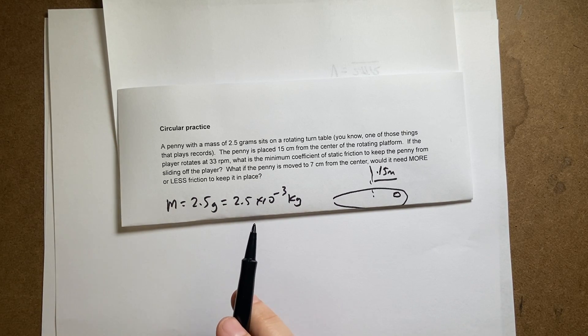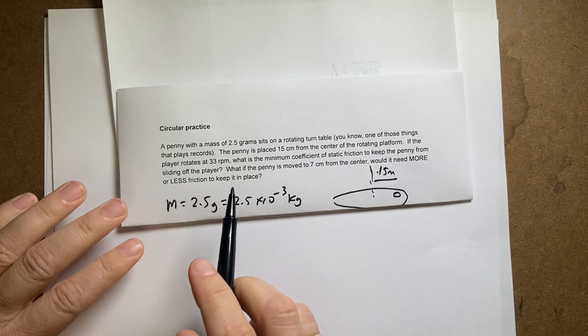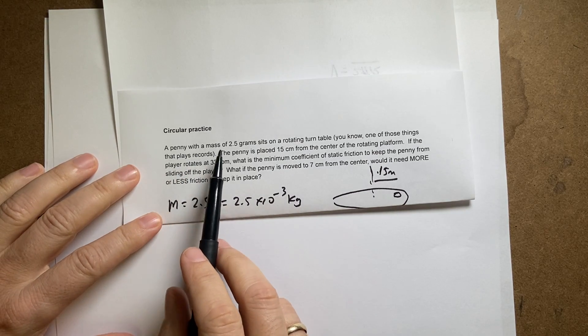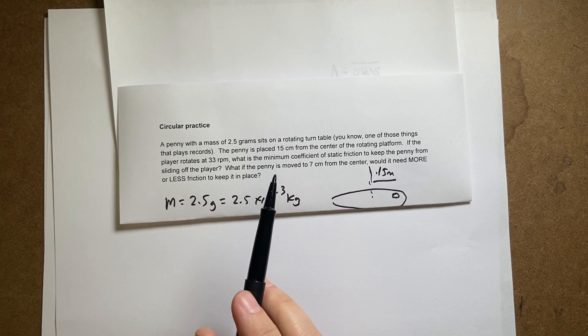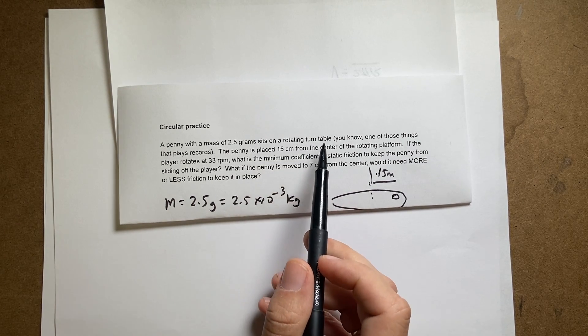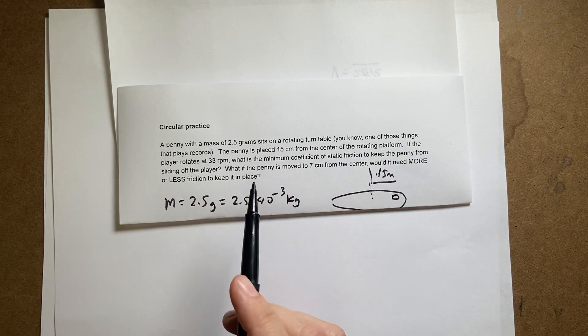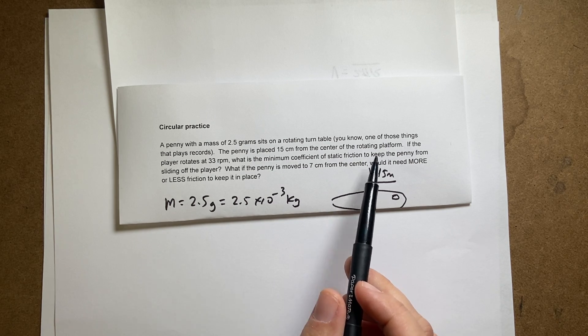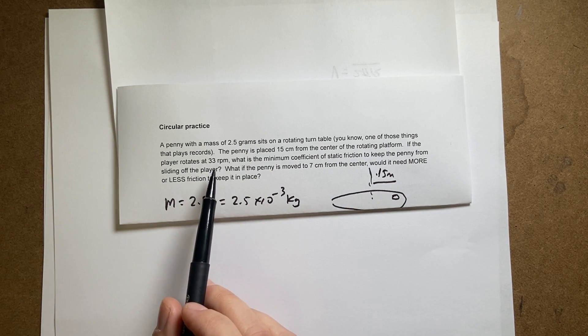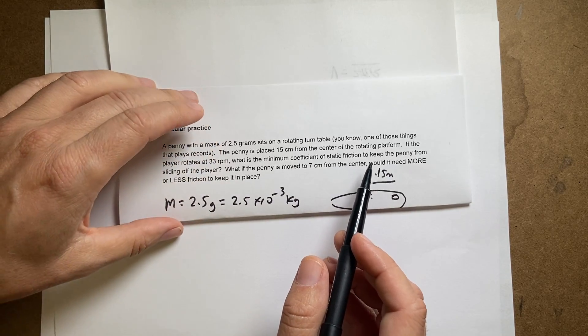Okay, here is a problem that I made up. I actually already started this but I realized I made a mistake so I'm doing it again. Here I have a penny with a mass of 2.5 grams, about the mass of a real penny. It's on a rotating platform which is a record player, a vinyl player. If the penny is 15 centimeters from the center of the rotating platform and it rotates at 33 rpm, what's the coefficient of friction needed to keep it from sliding?